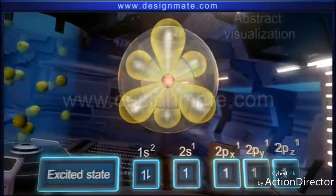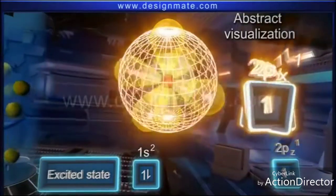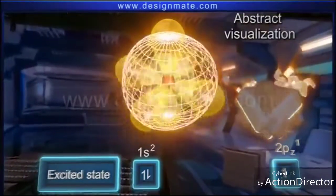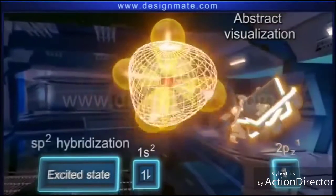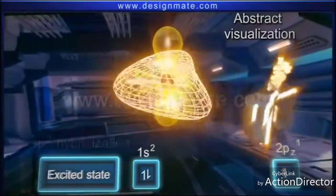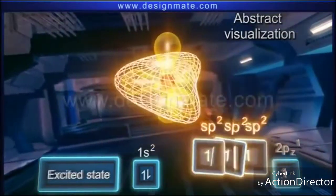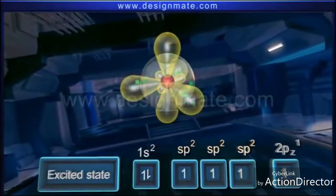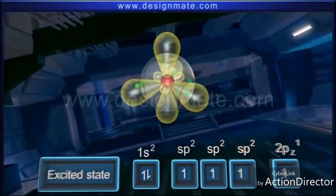one 2s and two of the 2p orbitals hybridize. Consequently, this hybridization is termed as sp2 hybridization. The hybridization leads to the formation of three equienergic sp2 hybrid orbitals.